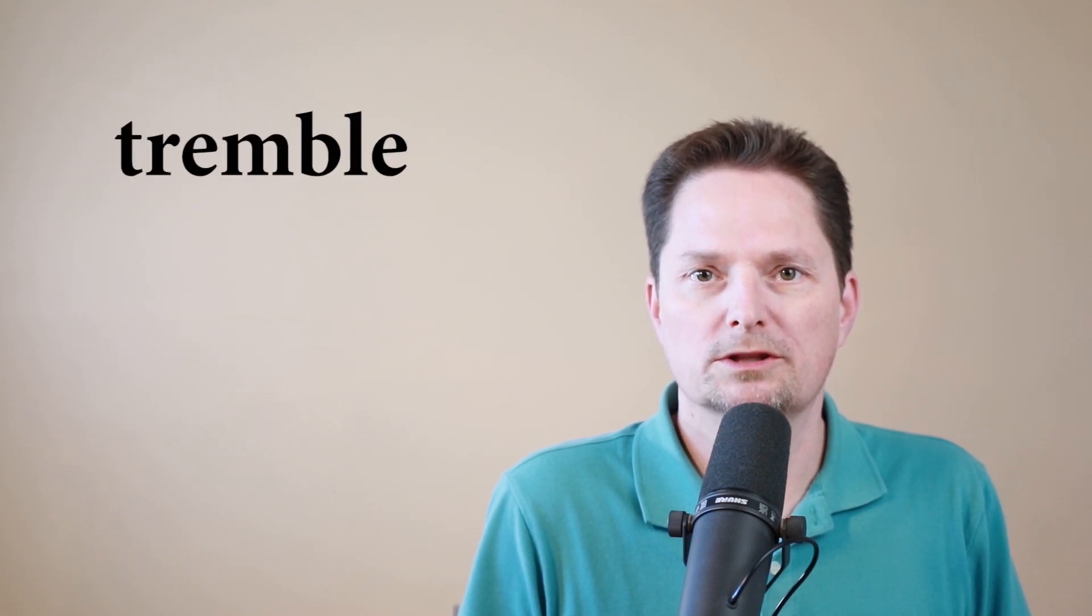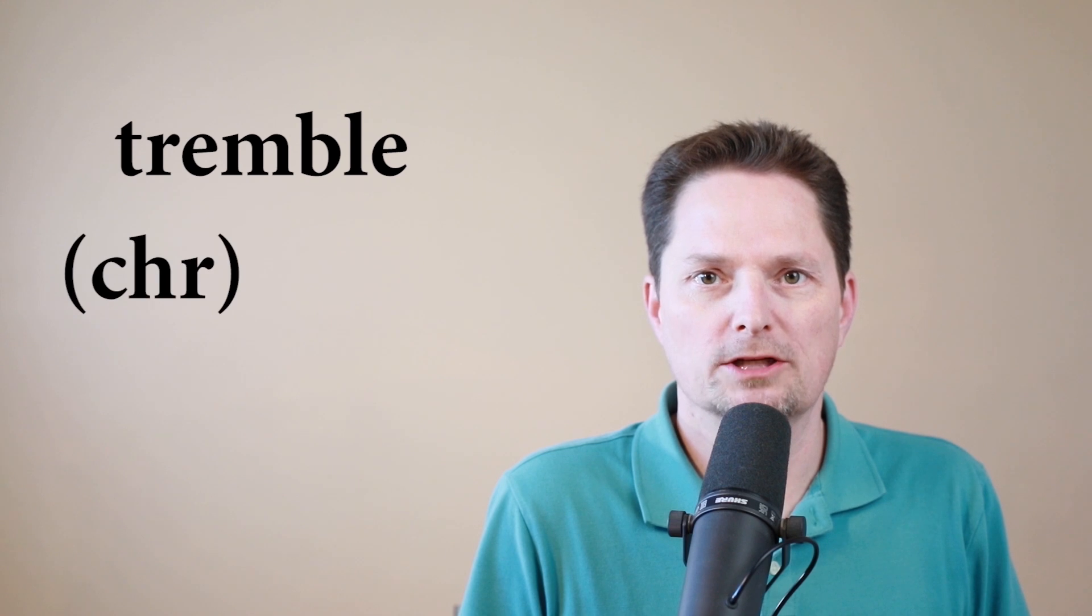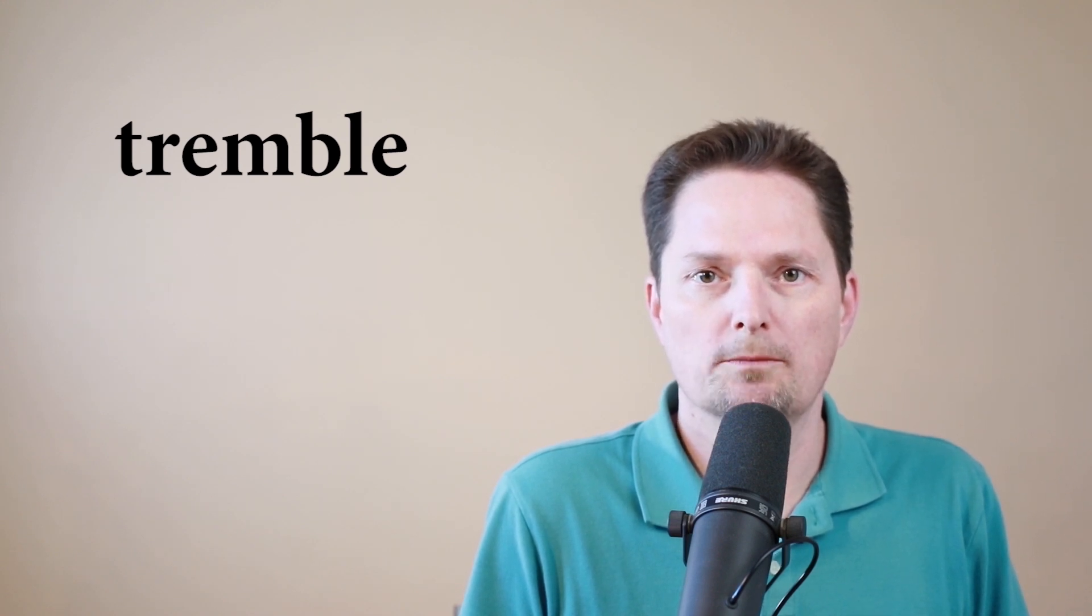First, let's talk about tremble. Pronunciation. The T-R together makes a CH sound like chicken. Tremble. Tremble is a verb.